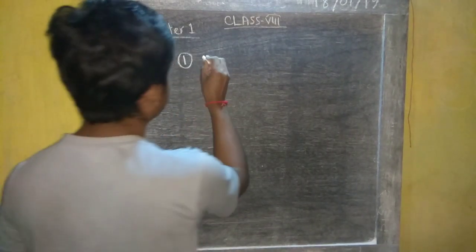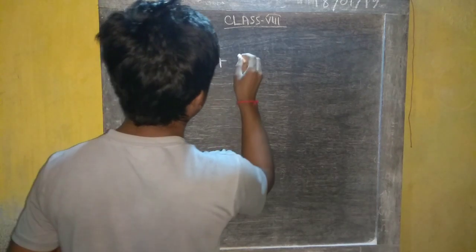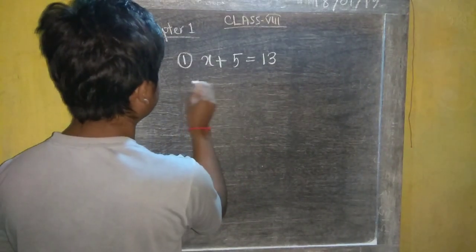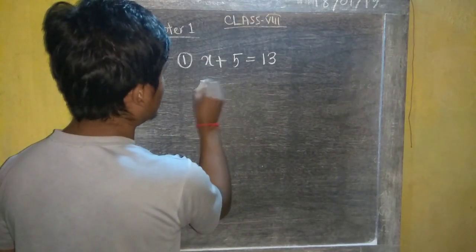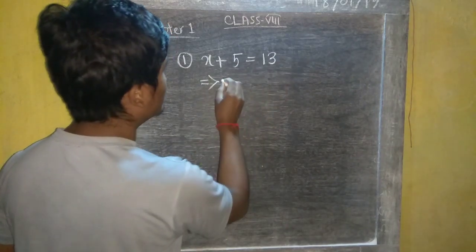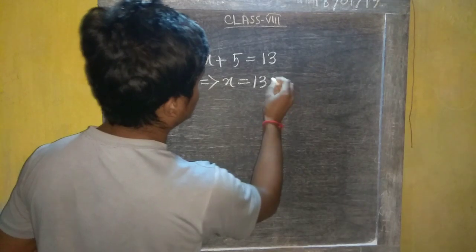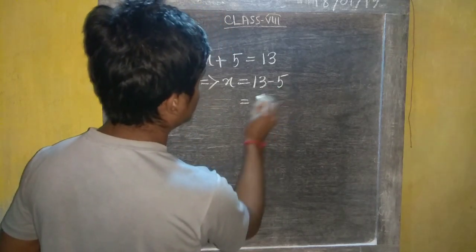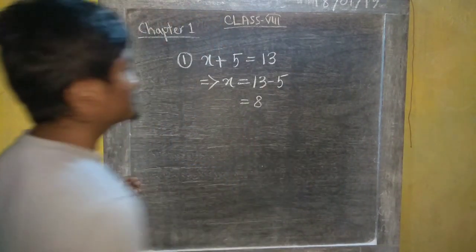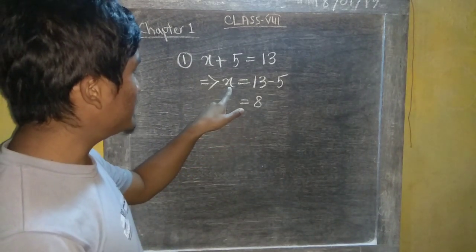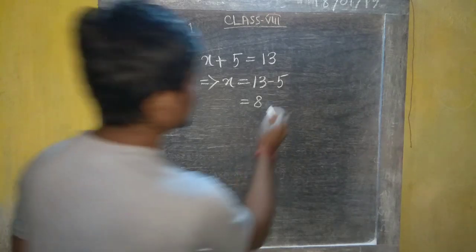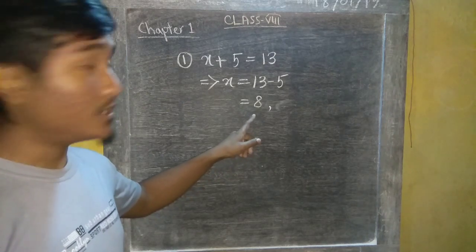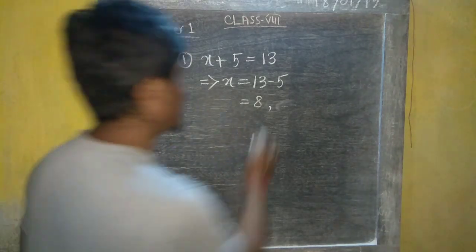Example 1: x plus 5 equal to 13. Solving, x equals 13 minus 5, which is equal to 8. So our result is x equal to 8. This is a natural number, as well as a whole number.